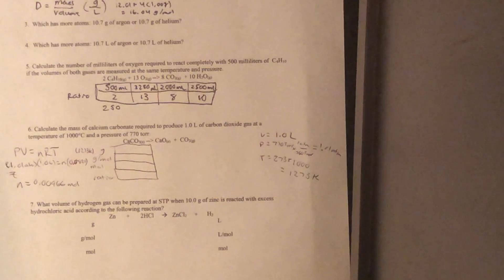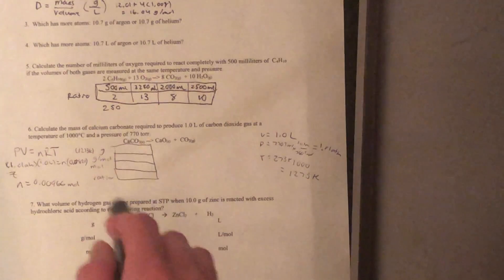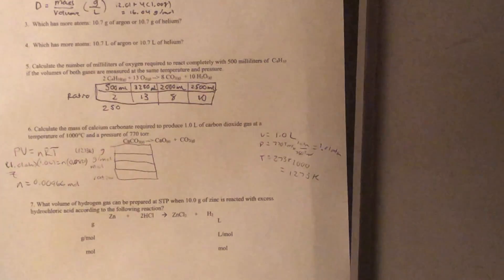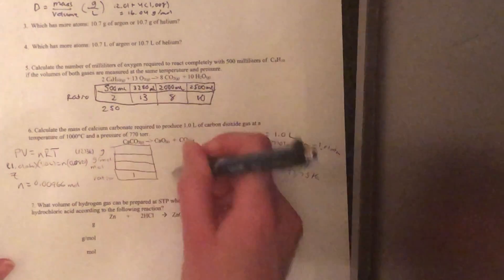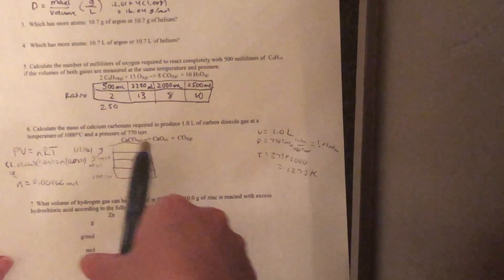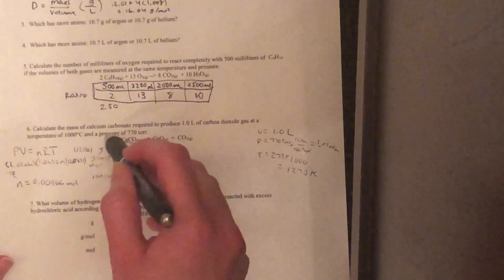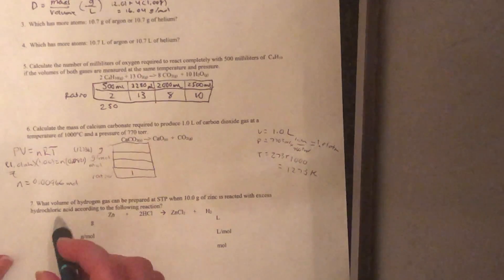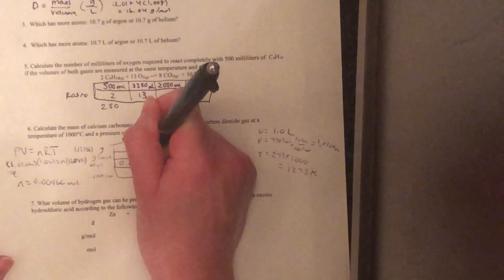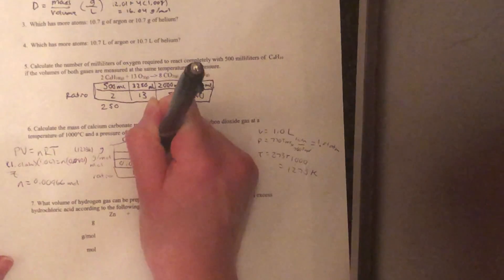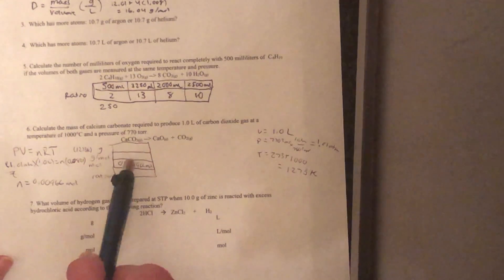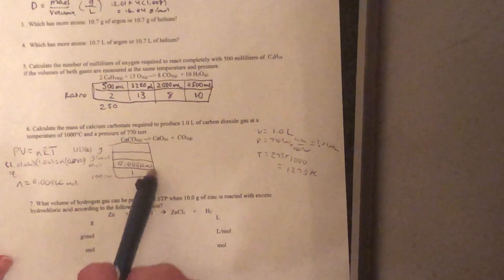So now that we have our moles, I set up a mini stoichiometry chart right here. Our ratio is going to be 1, as it is for everything else in the table, because of the implicit 1 coefficient. We're going to multiply as we go up this table. First we'll fill in our moles here, because we know that from calculating n.